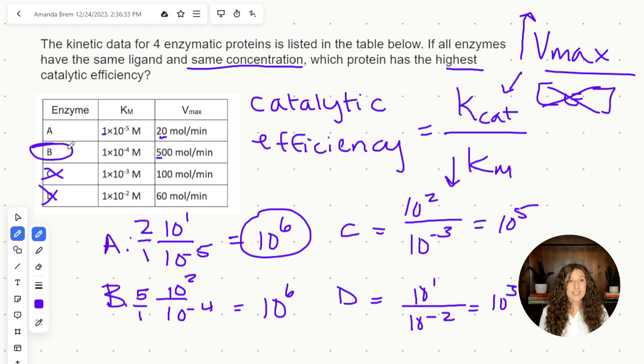So this is definitely a multi-step question. We did need to know catalytic efficiency and Kcat and their definitions. We need to substitute Vmax for Kcat. And then we needed to do a little bit of math to determine which had the biggest numbers given the values provided in the table. Let's move on to the trickiest question yet.